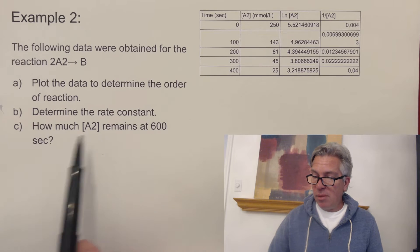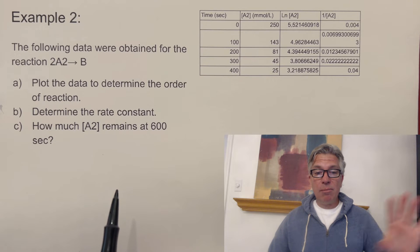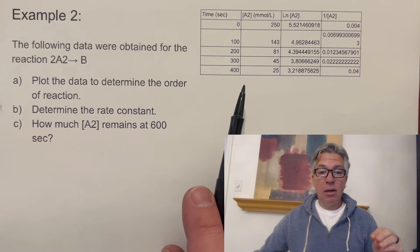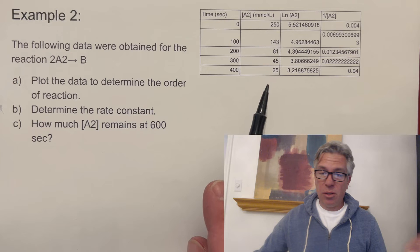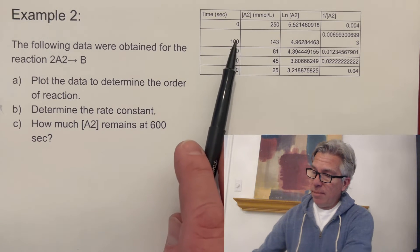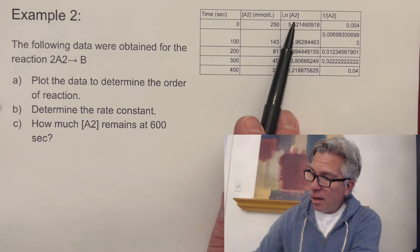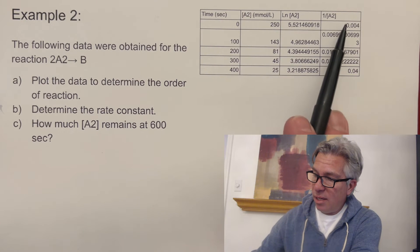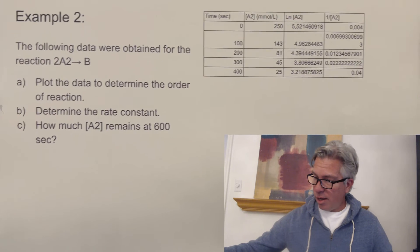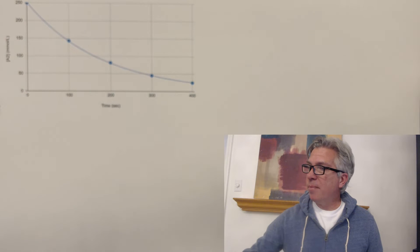Determine the rate constant and then how much remains after a certain amount of time. This is the beauty of integrated rate laws. They allow you to make predictions. Even if 600 seconds is not in your data, you can make predictions about what it will be at that time. So that's because that's what's really awesome and powerful about these things. So I made, my time is in seconds. A2 is in millimoles per liter. Always want to check that. And then I made a column. The spreadsheet calculated all the natural logs and all the inverses for me.